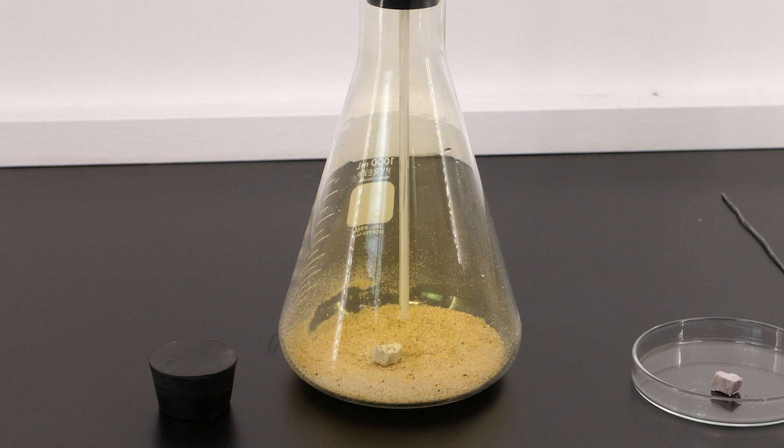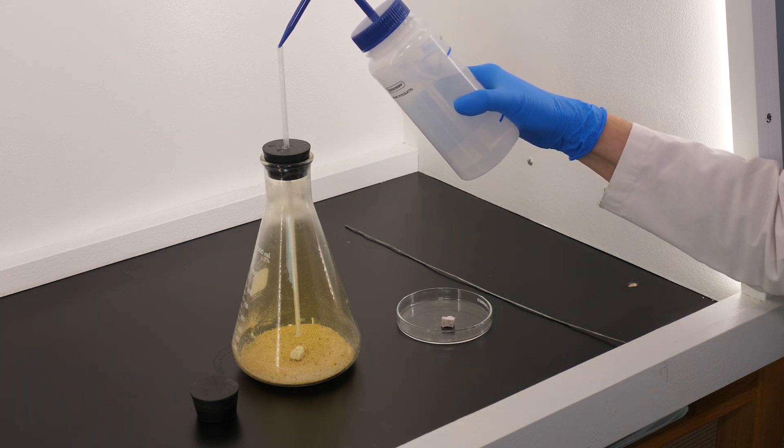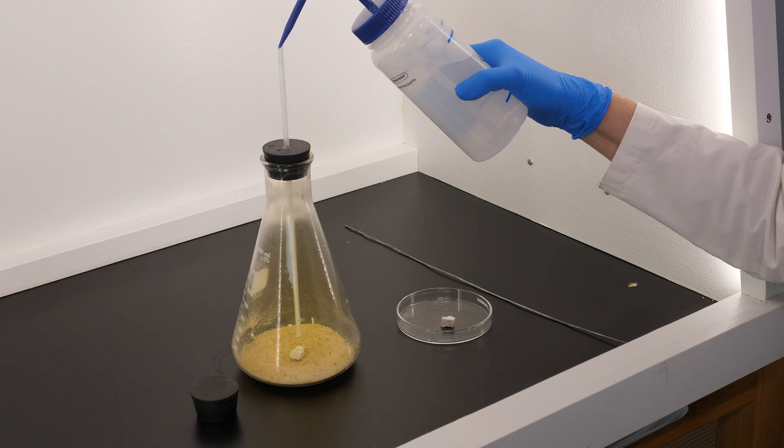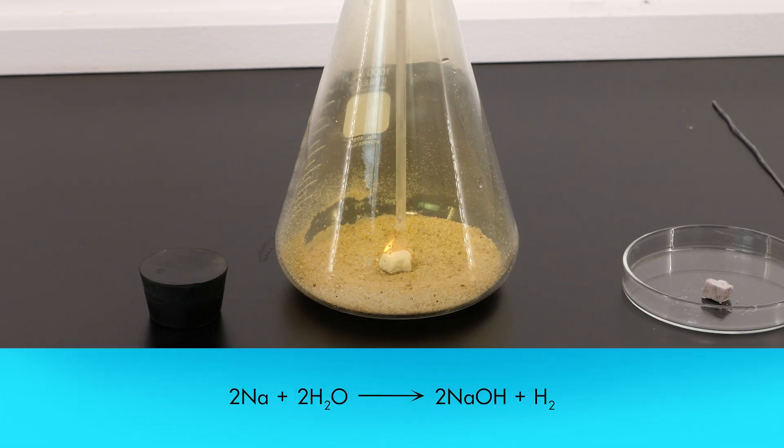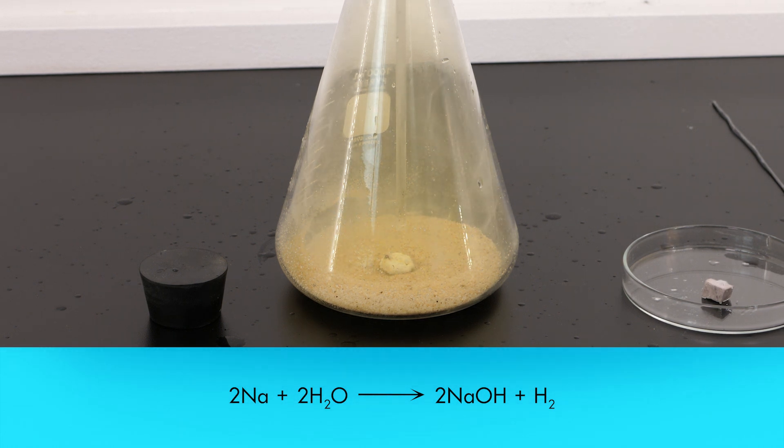Sodium must be in a liquid state before it will react with chlorine gas. To melt the sodium, we need to add a few drops of water through the glass tubing. The sodium will react with water to produce sodium hydroxide and hydrogen gas. This reaction will produce so much heat that it will ignite the hydrogen gas and melt the sodium.